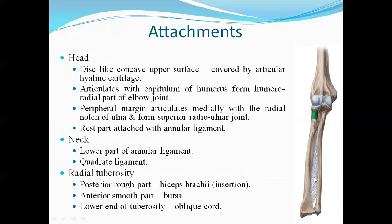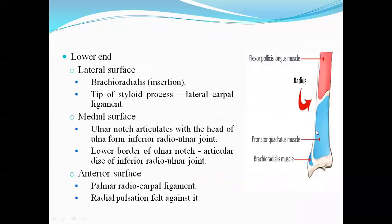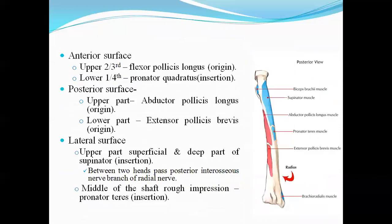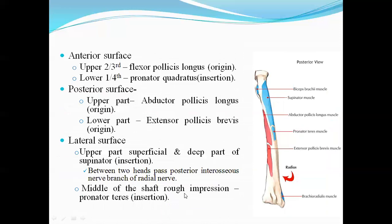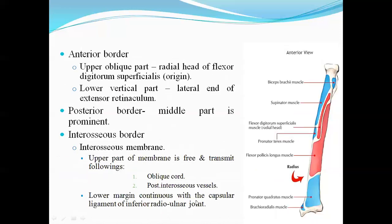The interosseous membrane is attached to the medial border of the radius. The inferior radioulnar joint has articular capsules, nerves, vessels, and ligaments. The upper part of the membrane is free and transmits the oblique cord and posterior interosseous vessels. The lower margin is continuous with the capsular ligament of the inferior radioulnar joint.